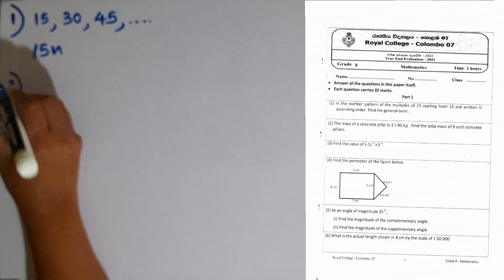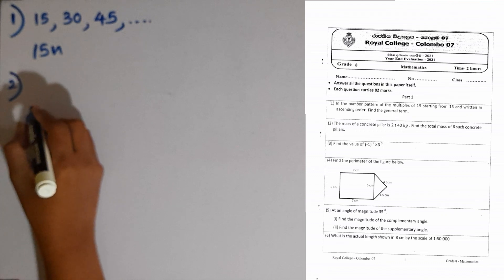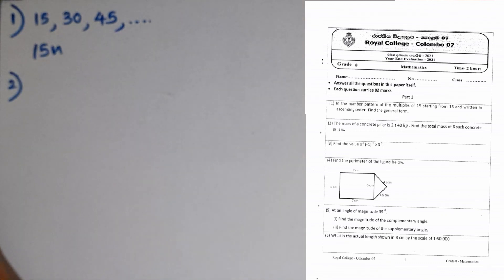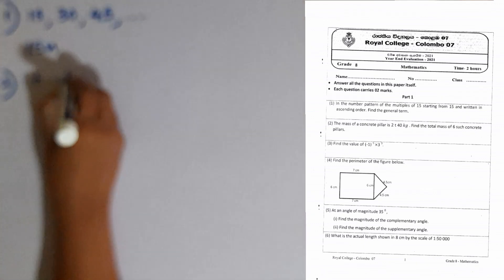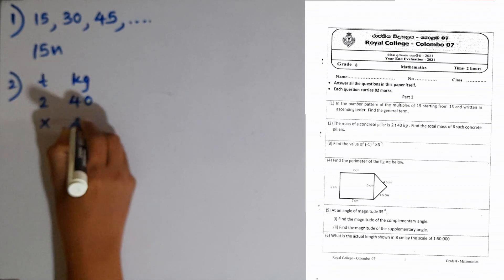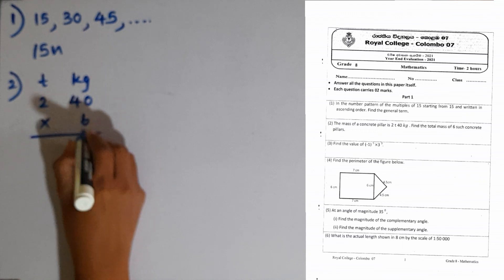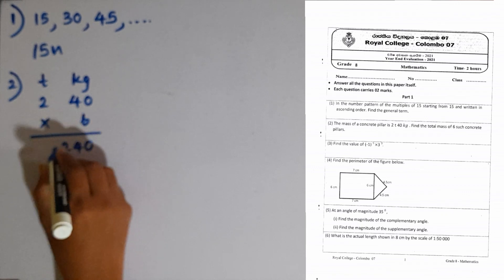Second question. The mass of a concrete pillar is 2 ton 40 kg. Find the total mass of 6 such concrete pillars. Writing tons and kilograms: 2 ton 40 kg should be multiplied by 6. Then 6 times 0 is 0. 6 times 4 is 240. We can keep this amount in the kilograms column.